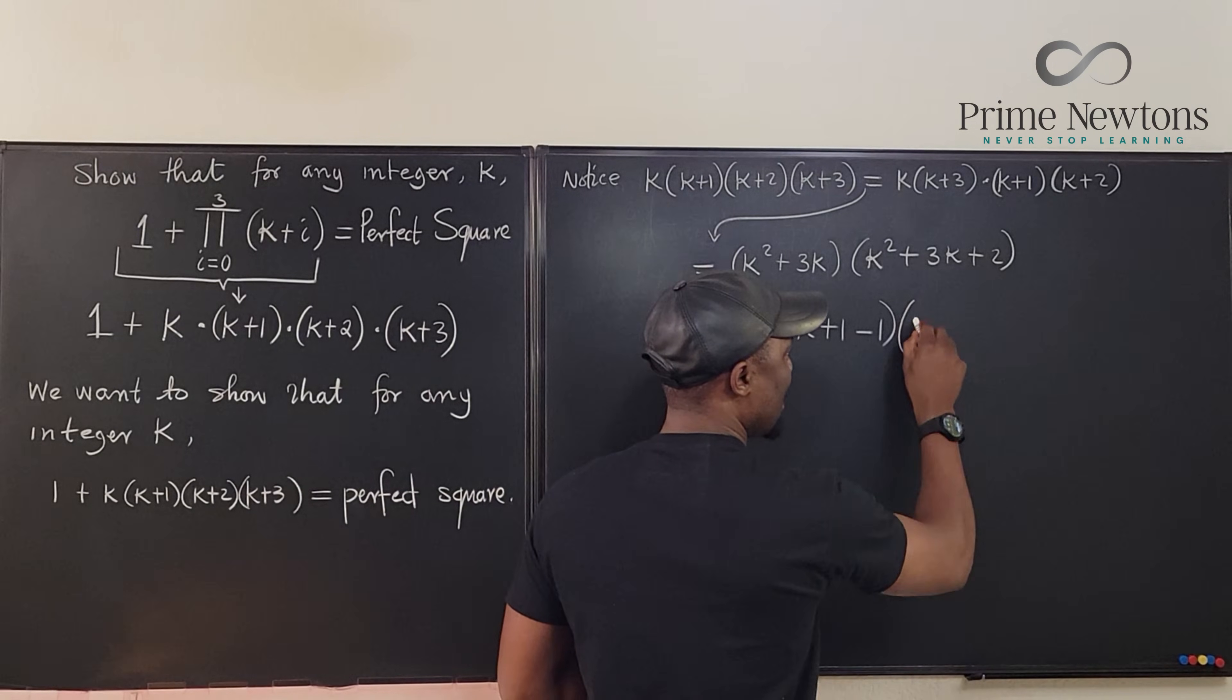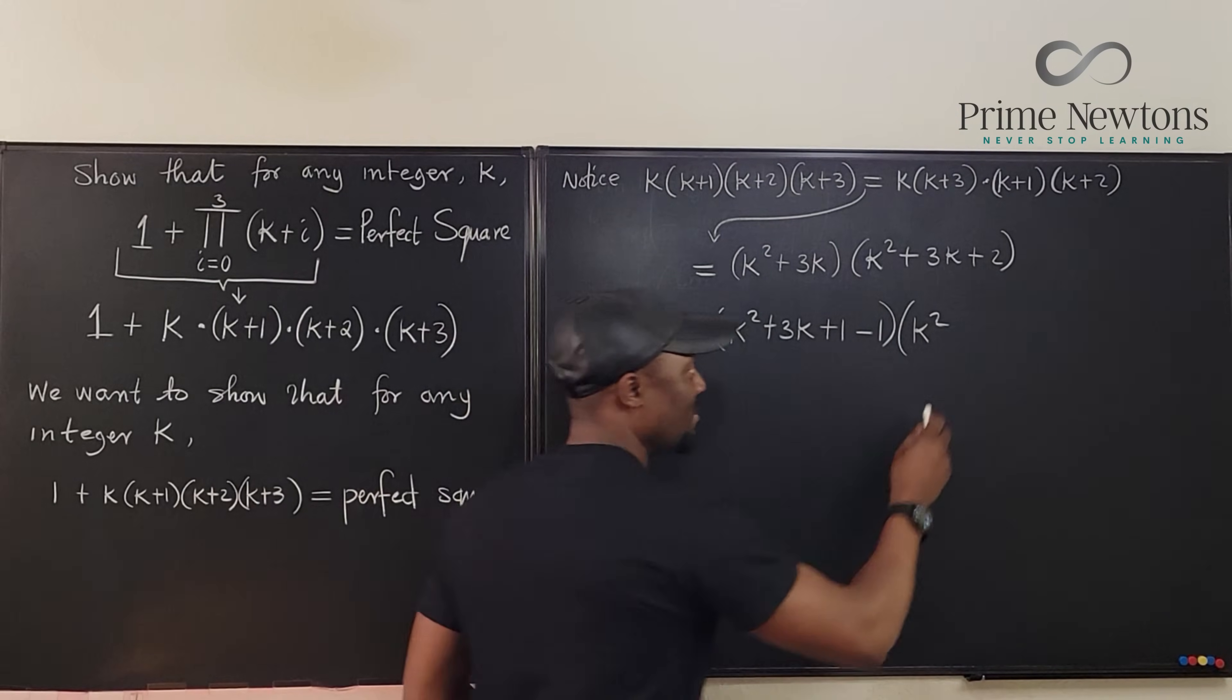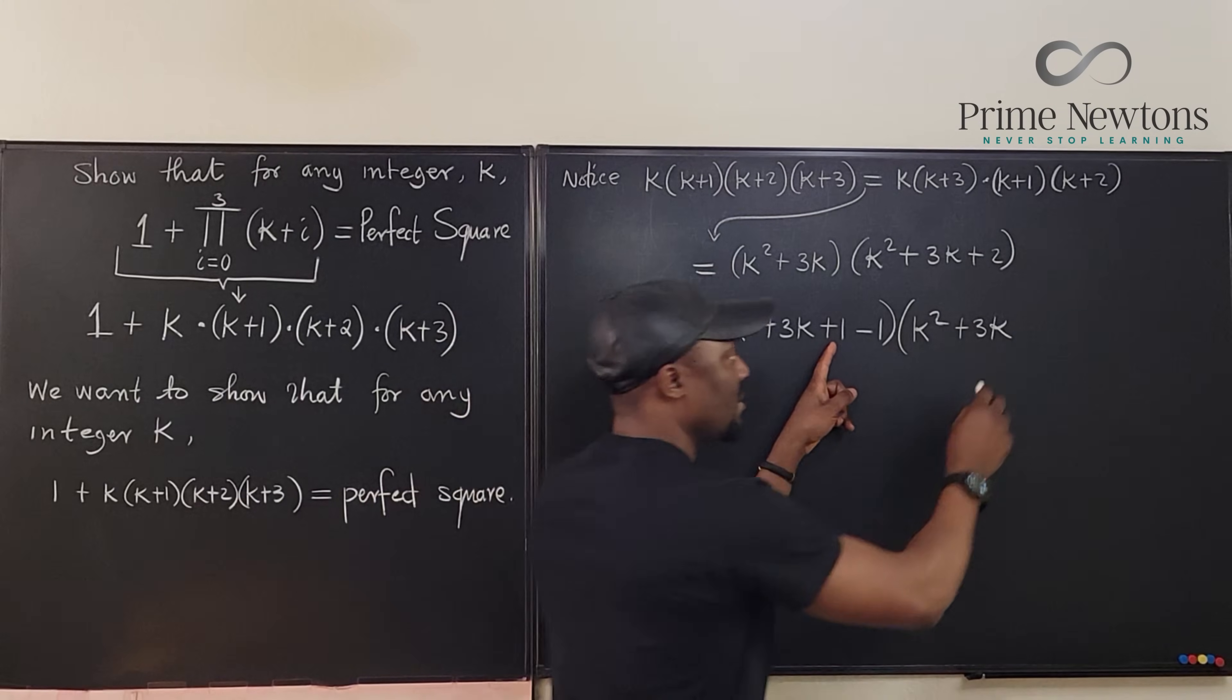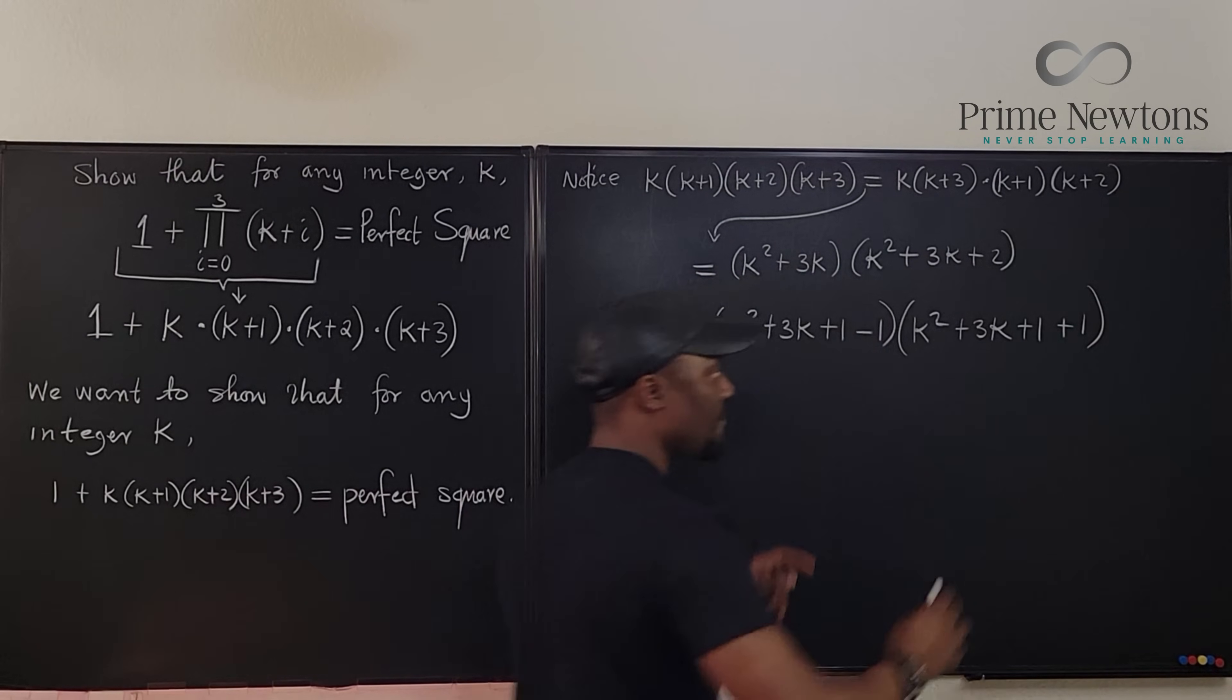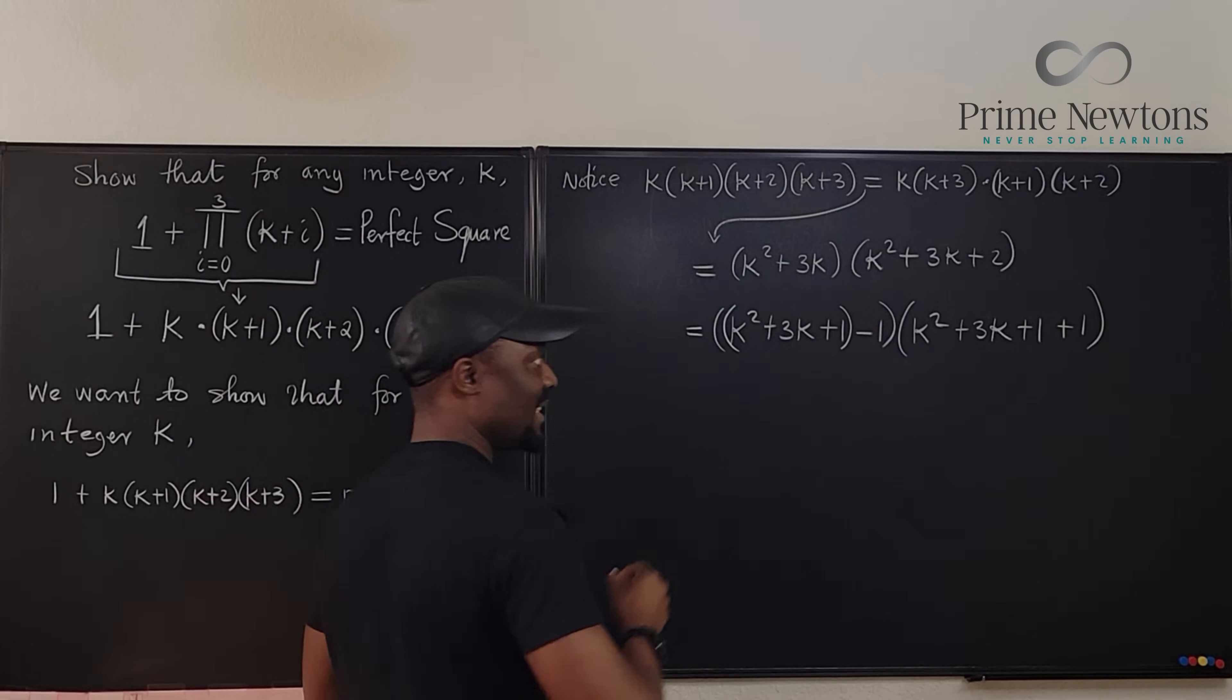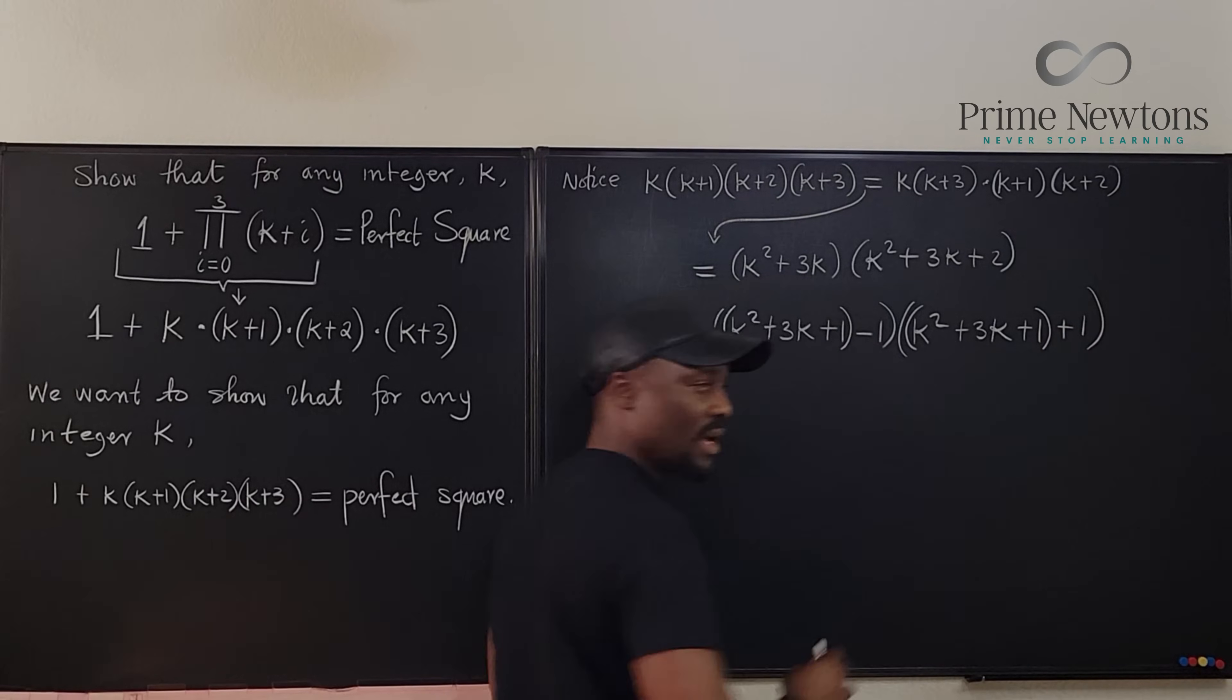Here it's going to be k squared. You see, I have the three k in the middle, which would have been a big problem, but it's no longer a problem. k squared plus three k. Now, instead of writing plus two, I'm going to write plus one. k squared plus one. From here, this is a term minus one. This is a term plus one. You notice that what is here is exactly what is here.